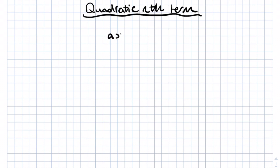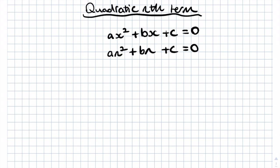Hello, welcome to this easy math tutorial on quadratic nth term. Today we'll be working out what the formula is for a quadratic sequence. Most of you are familiar with the quadratic equation being ax squared plus bx plus c equals zero. With quadratic nth terms, they are in the form an squared plus bn plus c, where n is the term number of the sequence.